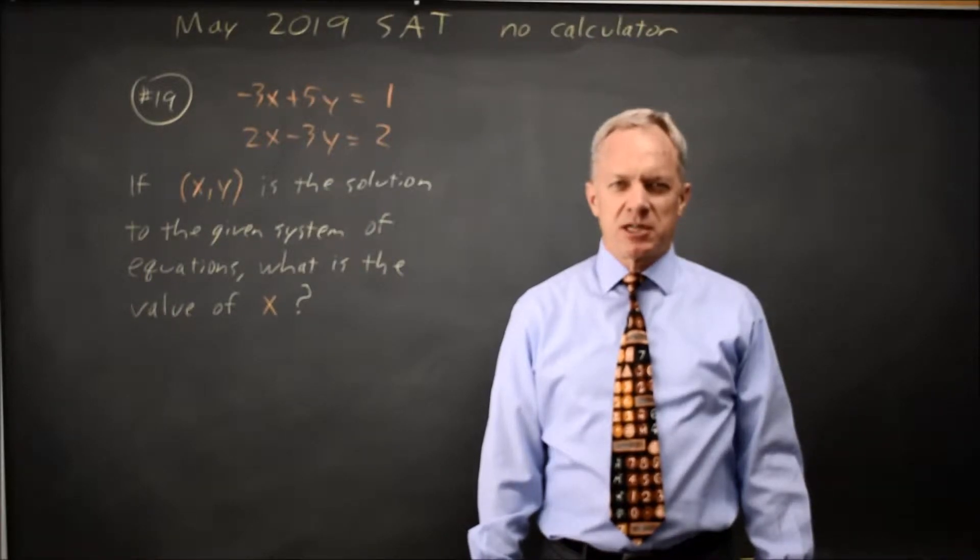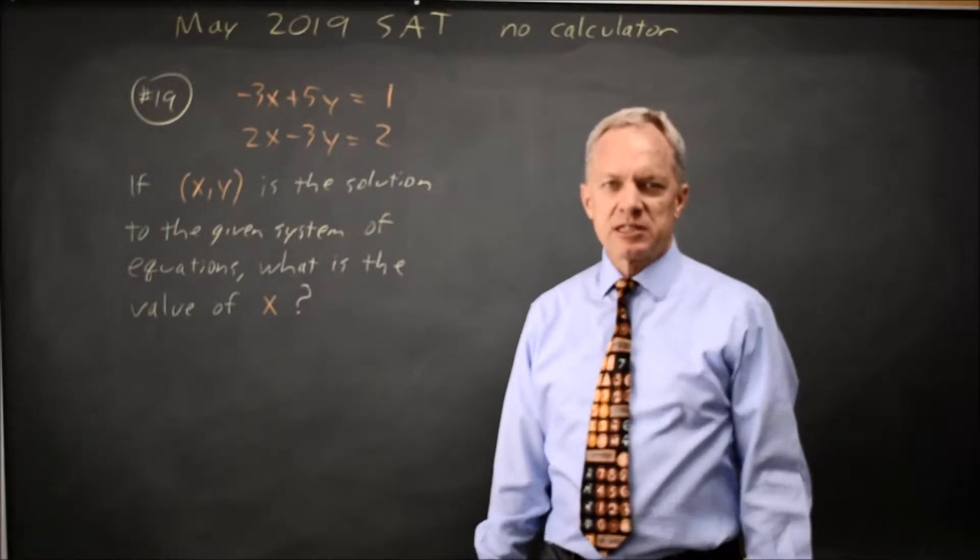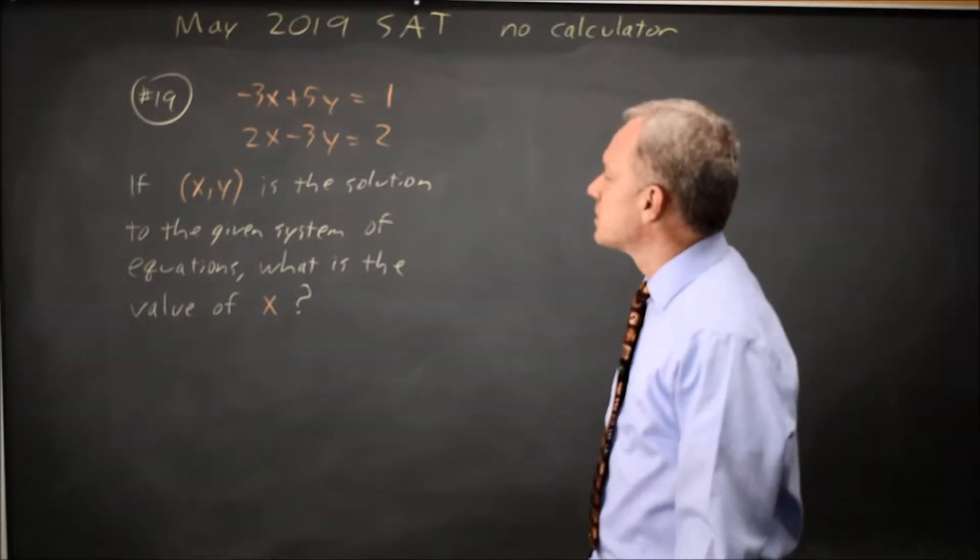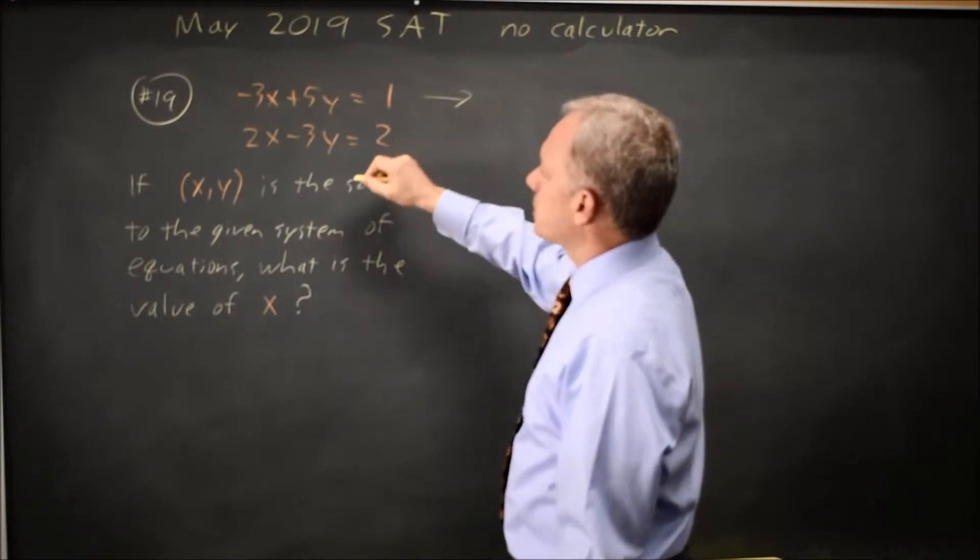This is non-calculator question number 19 for the May 2019 SAT. College Board gives us a system of equations and asks for the value of x, and there are no obvious easy ways to solve this, so since I'm looking for x, I'm going to use a linear combination to eliminate y.